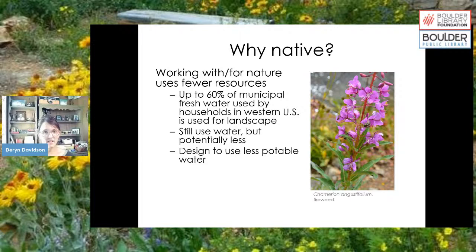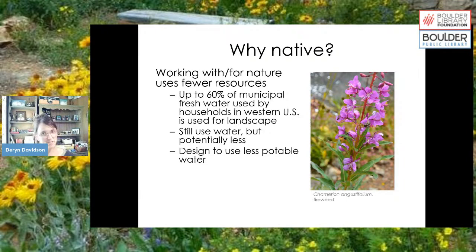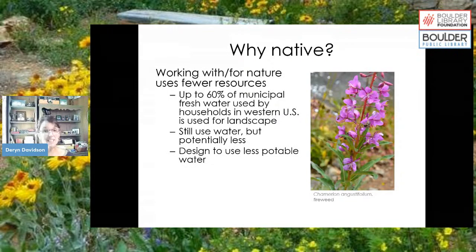For instance, in the western US it's estimated that about 60% of municipal fresh water is used on the landscape — water that could be used for drinking, bathing, cooking, and washing. We're dumping it outside on the landscape. Native plants generally use less water, so that's a really key thing. They still need some water, but you can design your landscape to use less potable water.